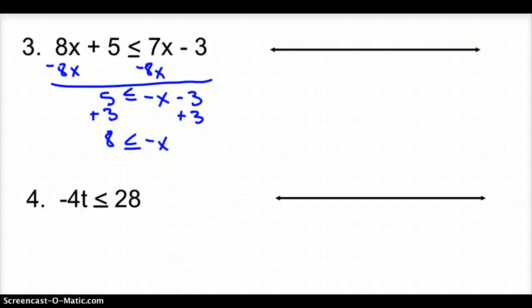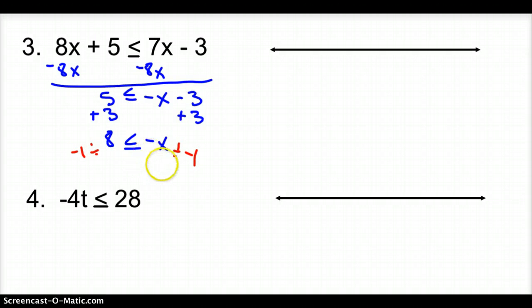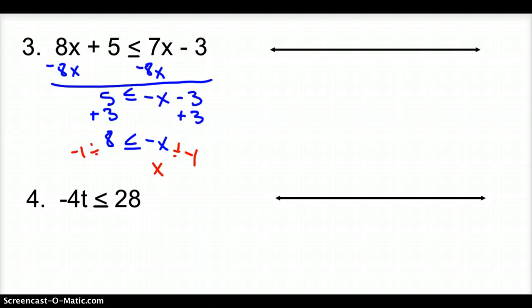We're not quite done because the negative is attached to x through multiplication, so I divide by negative 1. For the tricky part: when you divide by a negative, you have to flip the inequality. So flipping the inequality, our number turns into negative 8.